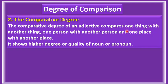Number two — the comparative degree. The comparative degree of an adjective compares one thing with another thing, one person with another person, or one place with another place. It shows a higher degree or quality of a noun or pronoun.